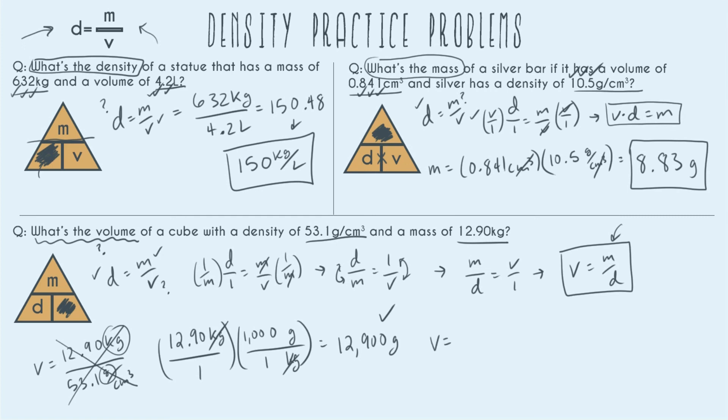So 12,900 grams over 53.1 grams per centimeters cubed. Now checking for sig figs we have three sig figs, 53.1, and four sig figs, 12.90, which means our limitation is three sig figs. So plugging in we have before sig figs we have 242.938 centimeters cubed and now going ahead and rounding to three sig figs we end up with 243 centimeters cubed for our final answer.